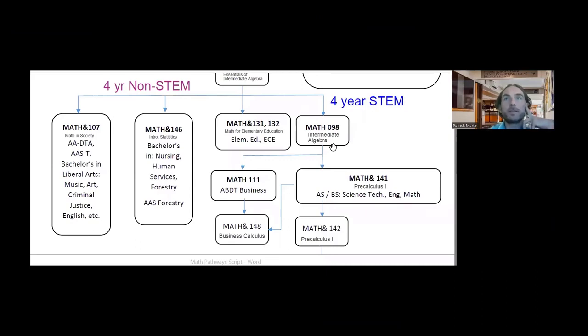Math 146 Statistics counts as the math requirement for a bachelor's in nursing, human services, psychology, forestry, and many more areas. Math 107 Math and Society is designed for a bachelor's in liberal arts, majors in humanities, arts, criminal justice, and more.